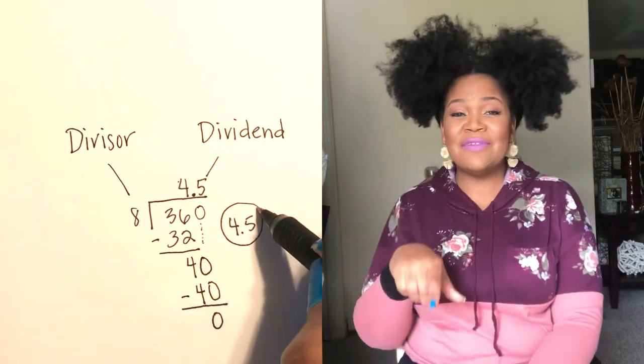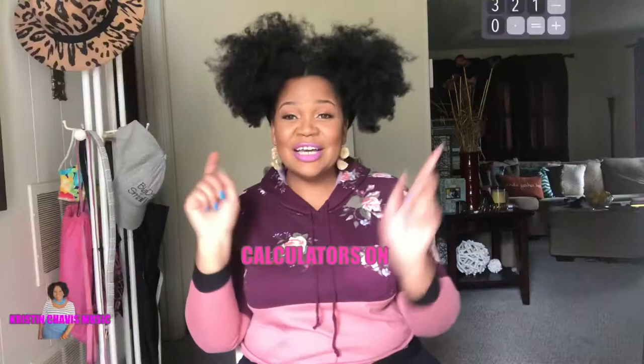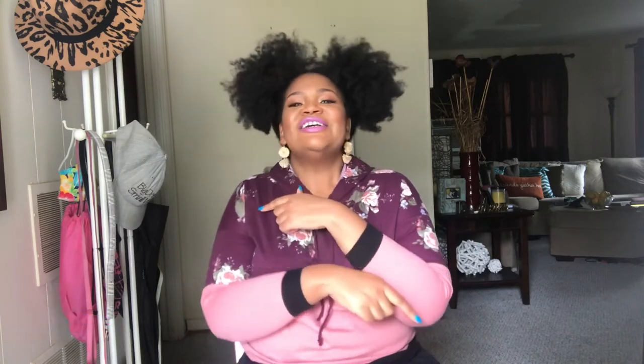Put the remainder next to the quotient. Move on to the very next problem, cause that's how we do long division. Calculators on, scratch paper out, write the problem down — long division time.